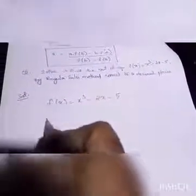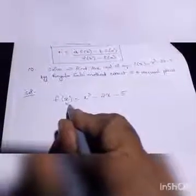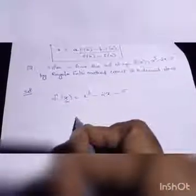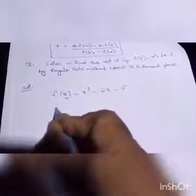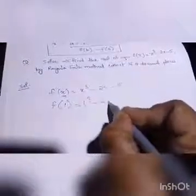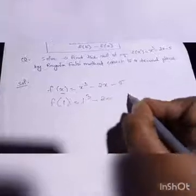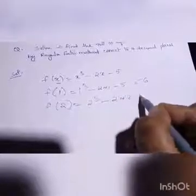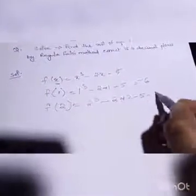So we have to find where the root lies. For that, for this x, substitute the values 1, 2, 3 and so on and find it. First I am substituting x as 1. So 1 cube minus 2 into 1 minus 5 and you will get minus 6. Then f(2), that is substituting 2 for x: 2 cube minus 2 into 2 minus 5 and there you will get minus 1.